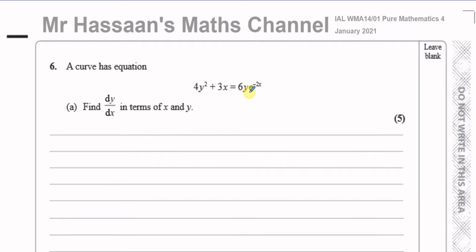The easiest way of dealing with this type of problem is to use implicit differentiation. Many people don't really understand what implicit differentiation actually is and just memorize a simple technique without understanding why. So I'm going to explain how to do it and also explain why we get what we get. I'm going to differentiate each term with respect to x separately.